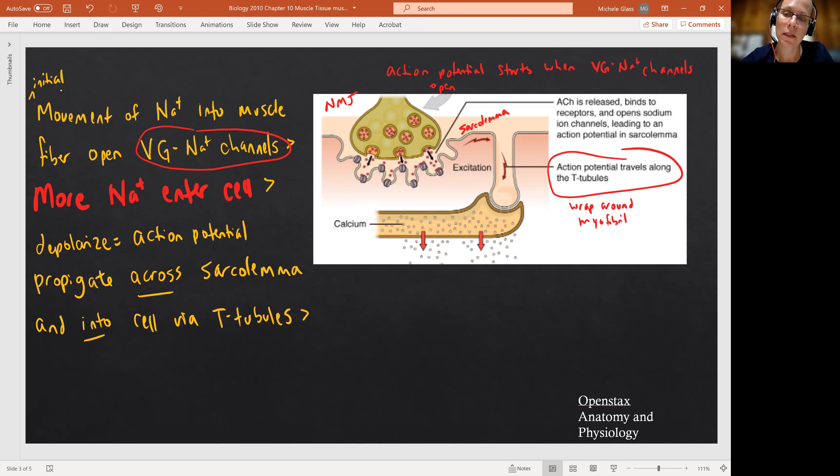And if you remember, we had that place that we called the triad. It's not exactly pictured here, so let's just remind ourselves that we had the terminal cisterna, T-tubule, terminal cisterna sandwich kind of thing, right? Terminal cisterna, remember, is actually the enlarged part of the sarcoplasmic reticulum. So here in this diagram, we see this T-tubule connecting into the sarcoplasmic reticulum. And notice you have all those little dots inside the sarcoplasmic reticulum, which are labeled as calcium.